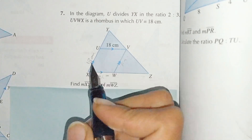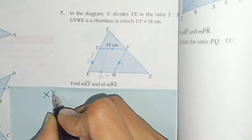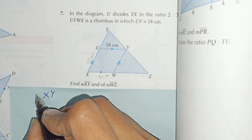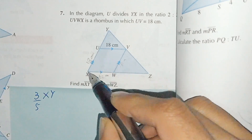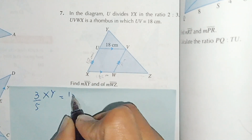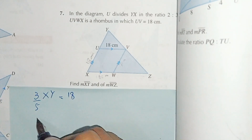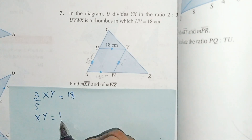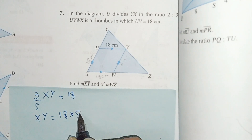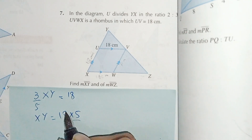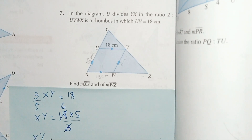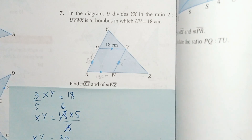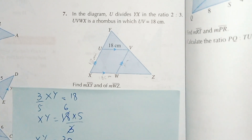In question number 7, the ratio given is 3 over 5. This is the total ratio of the rhombus, and the side ratio equals 18. To find the value of XY we cross multiply: 5 multiplied by 18 divided by 3 gives 6 times 5 equals 30. So XY equals 30 centimeters.